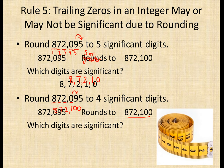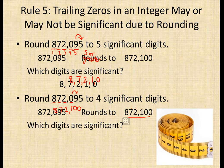But when we ask which digits are significant, we see it's the 8, the 7, the 2, and the 1. So here we only have four significant digits because of how we rounded. The number looks the same, but 8, 7, 2, and 1 are the significant digits.